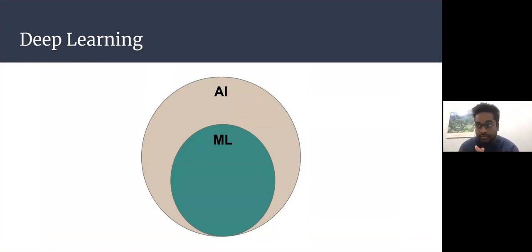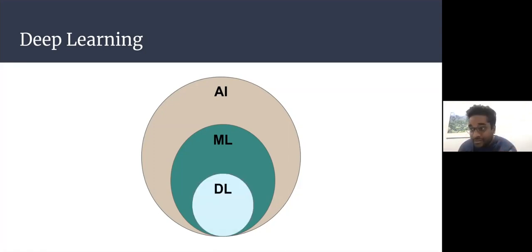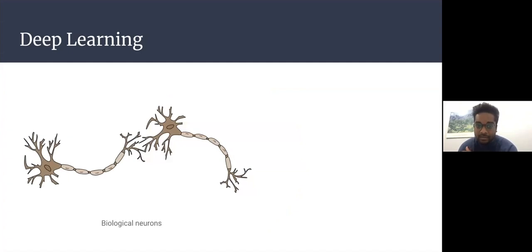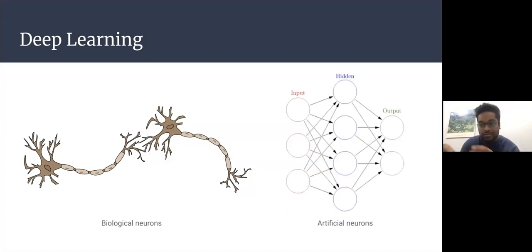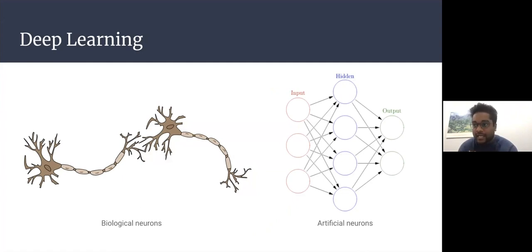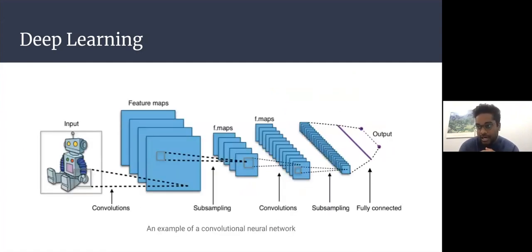A subset of AI is machine learning, which automatically learns from a large dataset without being explicitly programmed. A subset of ML is deep learning, which is inspired by the way the brain processes information using neural networks. Biological neurons take signals from some neurons and pass them on to other neurons, and this is similar to how artificial neurons within neural networks process and are structured.